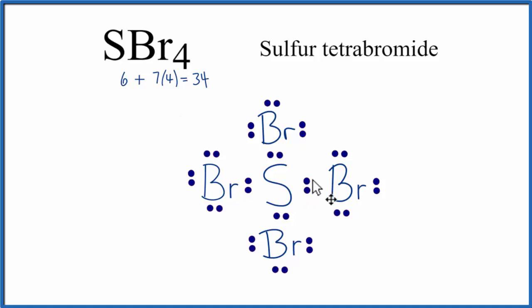Sulfur can have what's called an expanded octet, more than 8 valence electrons. So we can take those last 2 valence electrons and put them on that central sulfur. We kind of needed to squeeze them in there, but this is the Lewis structure for SBr4.